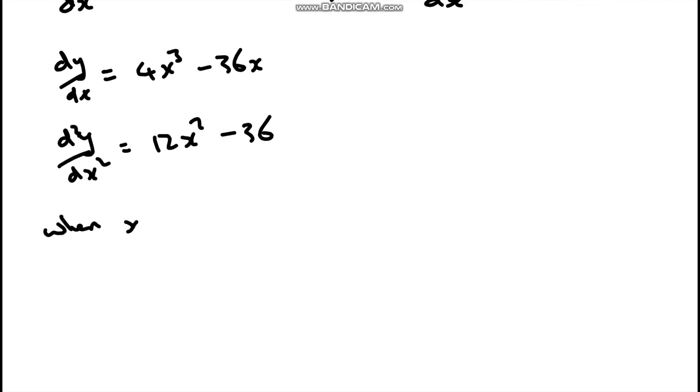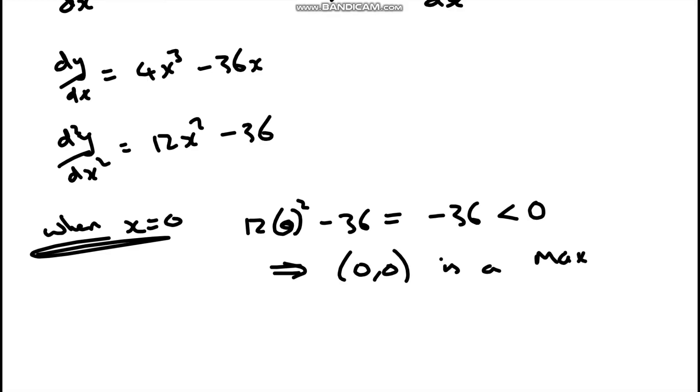So when x equals 0, we're going to have 12 times 0 squared take away 36, which is going to mean negative 36. This is less than 0. So it tells us that our coordinate, and we're going to have to list the whole coordinate here, (0, 0), if it's less than 0, it is a maximum.